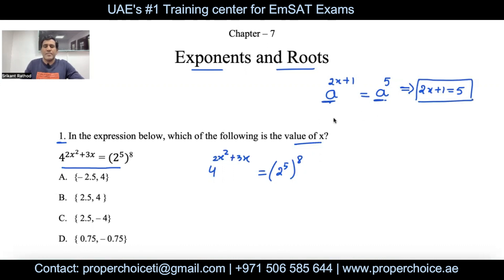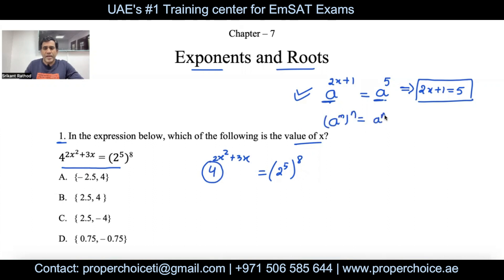To solve our problem, we need to make the bases the same. The base on the left is 4, and on the right we have 2 to the power 5 to the power 8. We can write 4 as 2 squared. Applying the power of a power rule — a to the power m to the power n equals a to the power (m × n) — we multiply 5 and 8 to get 40. So the right side becomes 2 to the power 40, and the left becomes 2 squared to the power (2x² + 3x).